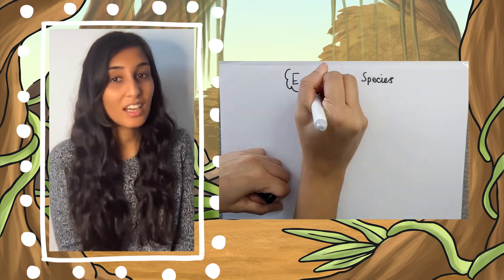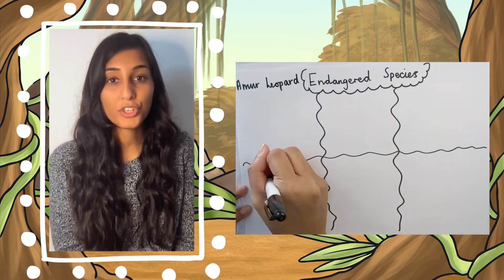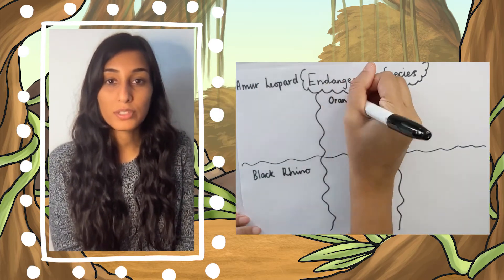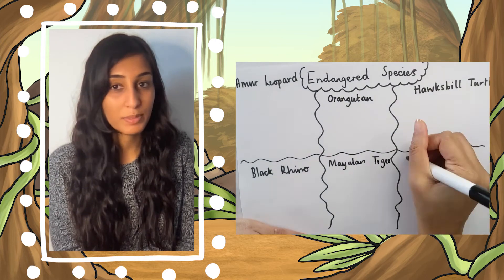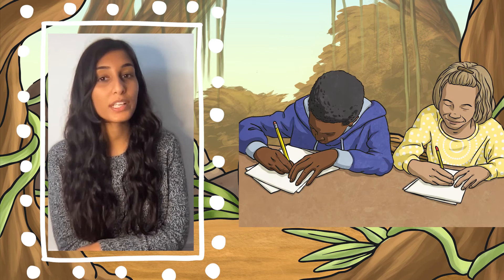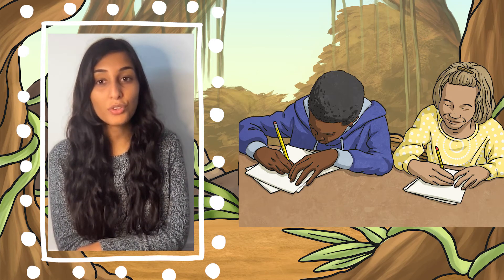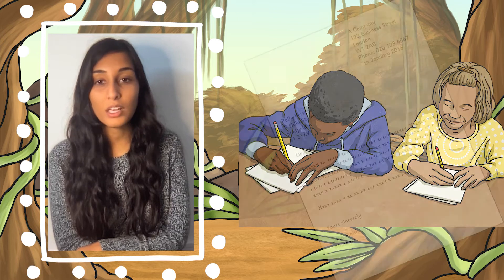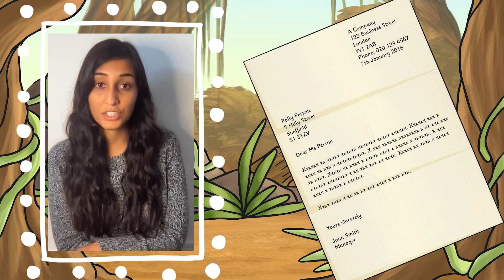An activity idea: why not ask your children to create their own poster to inform others about endangered species? You could also incorporate this presentation into your writing lessons by asking the children to write to local members of parliament, asking what politicians are doing to help these endangered species.